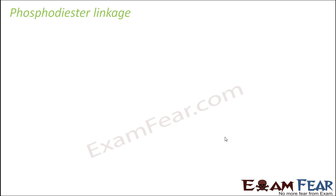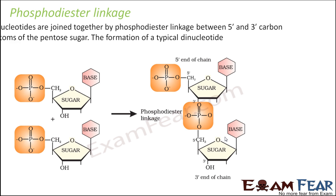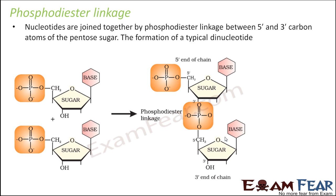That is the significance of phosphodiester linkage. We spoke about three types of bonds while talking about the structure of a polynucleotide: one was the glycosidic bond, the second was the phosphoester bond, and the third is the phosphodiester bond. Let us quickly have a look at the phosphodiester linkage once more.